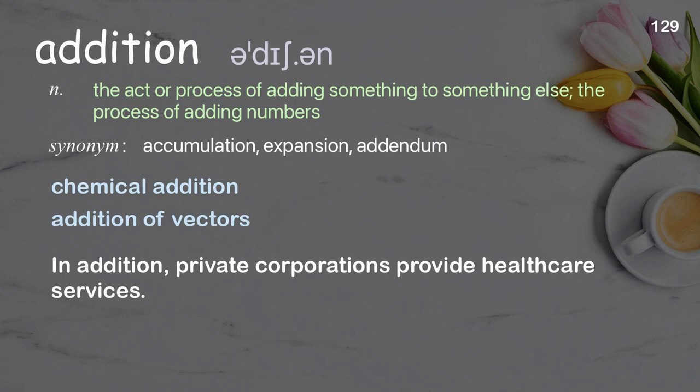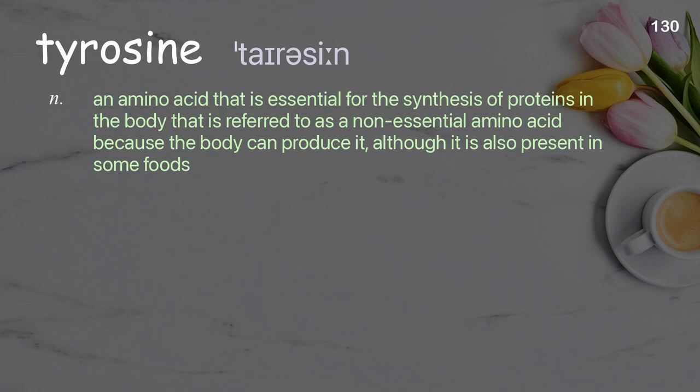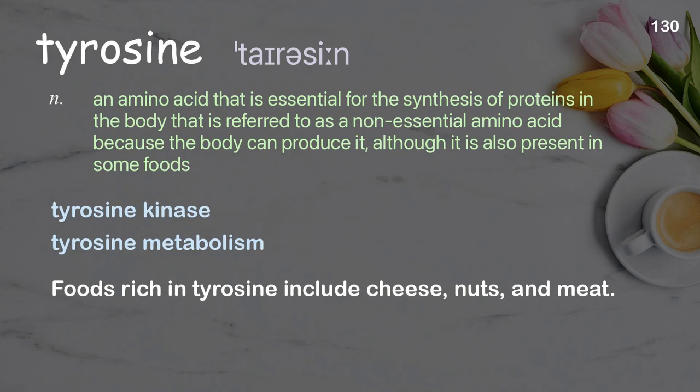Tyrosine: an amino acid that is essential for the synthesis of proteins in the body, referred to as a non-essential amino acid because the body can produce it, although it is also present in some foods. Examples: tyrosine metabolism. Foods rich in tyrosine include cheese, nuts, and meat.